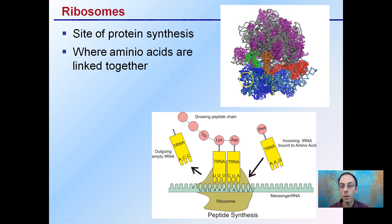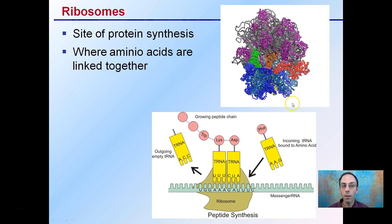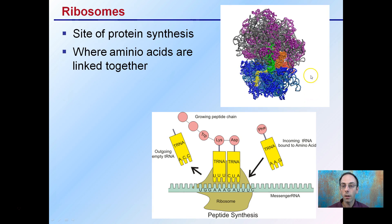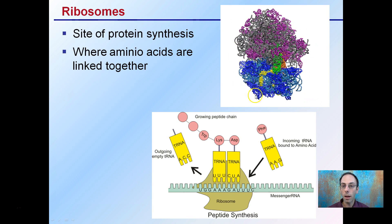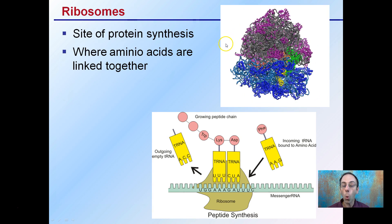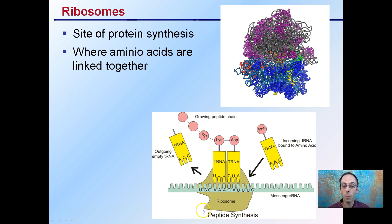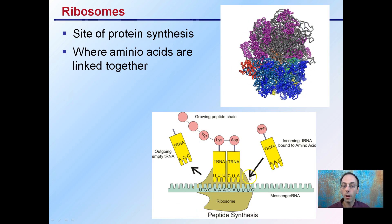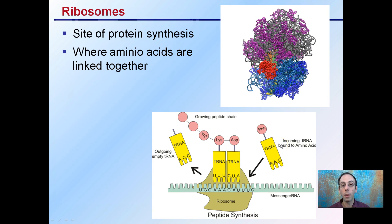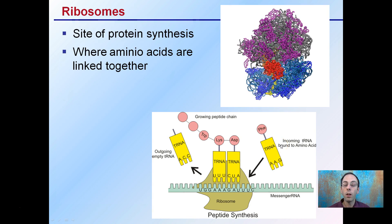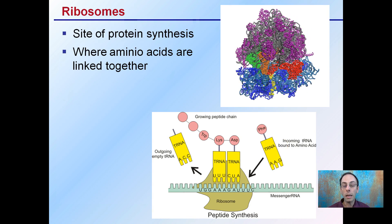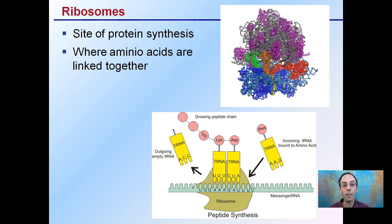Ribosomes are the site of protein synthesis, where amino acids are linked together. We can see one indicated here. It's where amino acids are linked together to form polypeptides, also known as proteins. A specific type of protein would be an enzyme.